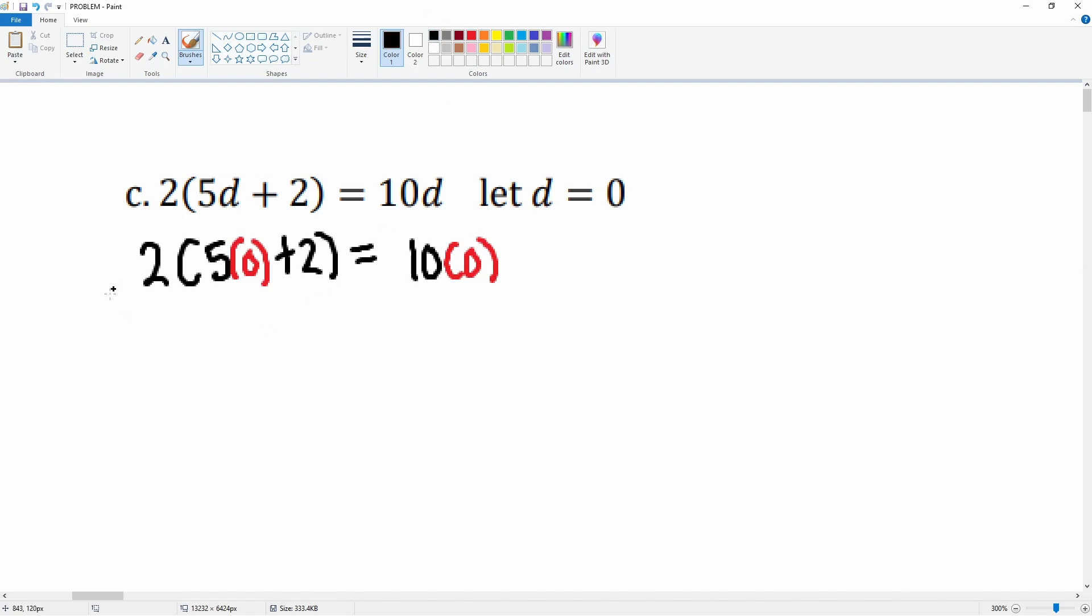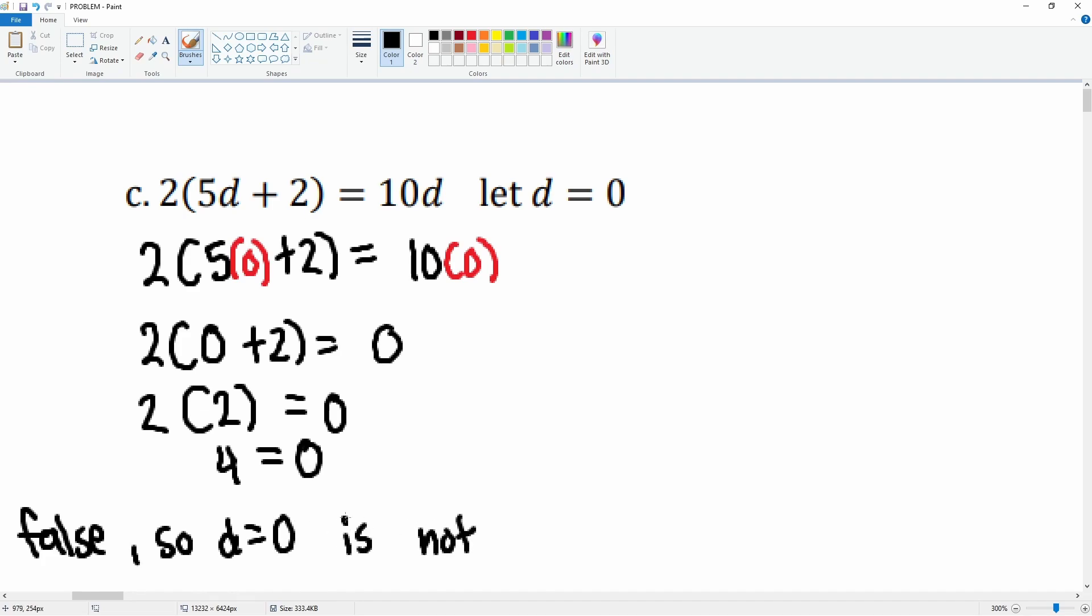Okay? Let's combine some like terms here. 5 times 0, which is 0, plus 2 is equal to 0. 0 plus 2, which is just still 2. 2 times 2, which is 4. 4, is that equal to 0? This is false. So d equals 0 is not a valid solution.